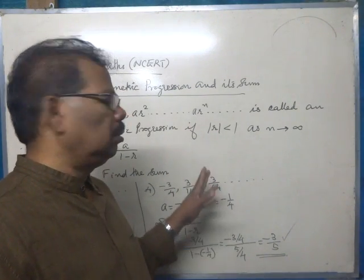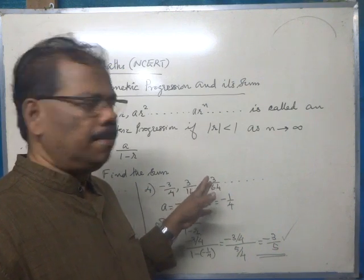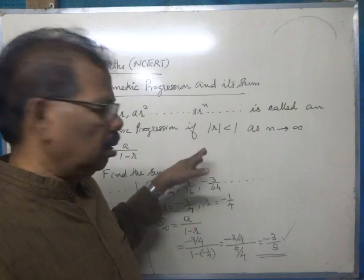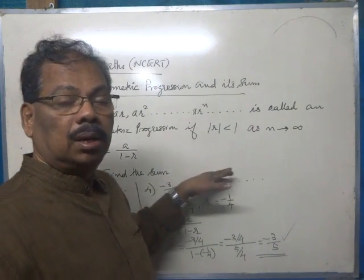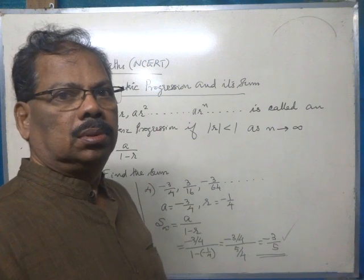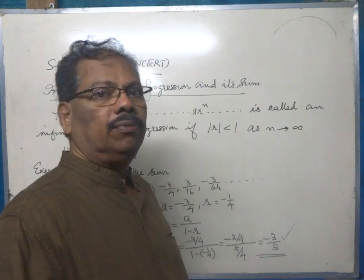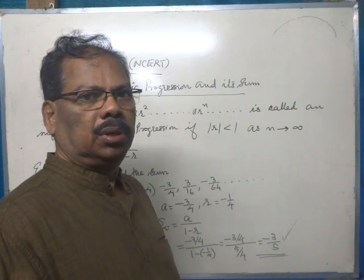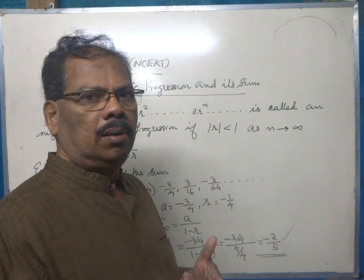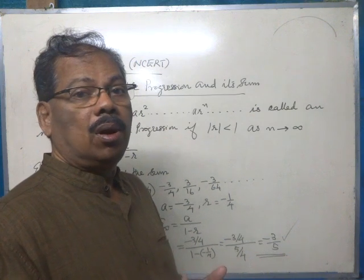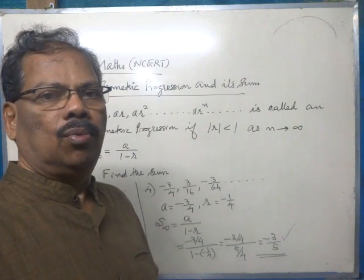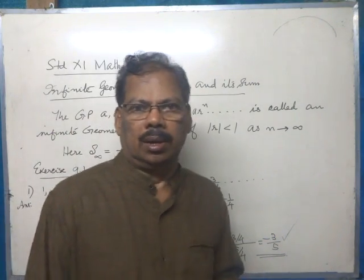In geometric progressions, this formula for the sum to infinity is applicable when the common ratio has a modulus less than 1.